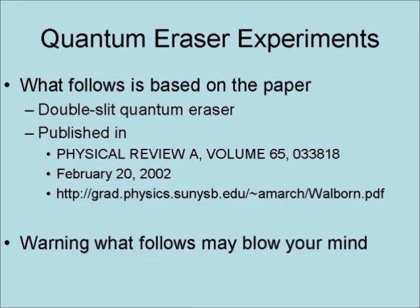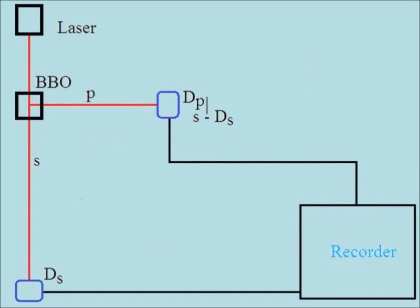Warning: what follows may blow your mind. The experiment uses single photons from an argon ion pump laser at a wavelength of 351.1 nanometers. The photons pass through a special nonlinear crystal called beta-barium borate (BBO), used to produce entangled photon pairs, each with twice the original wavelength, giving them a wavelength of 702.2 nanometers. Each photon goes in a different direction, labeled P and S, going to two different detectors: S photons go to detector DS, and P photons go to detector DP.